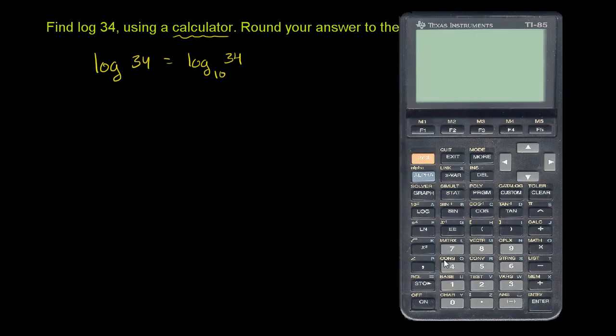But on most of the TI graphing calculators, you see this log button right over here. And so that is base 10. You don't see the little 10 subscript right over here. But when you just see a log, that assumes base 10. So if I write log of 34, this is the power I need to raise 10 to to get to 34.